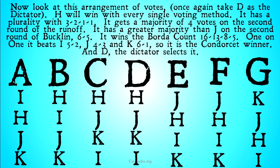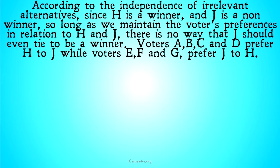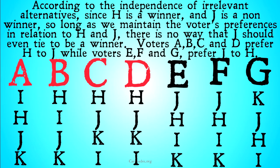Now according to the Independence of Irrelevant Alternatives, if I pick two candidates — let's say H and J — H is a winner in all of the methods and J is a non-winner. So long as we maintain the voters' preferences in relation to H and J, there is no way that J should even tie or become a winner. Voters A, B, C, and D prefer H to J, while voters E, F, and G prefer J to H. So for A, B, C, and D I can't change it so that J is higher than H, and for E, F, and G I can't change it so H is higher than J — but otherwise I can change anything, because those other things are irrelevant to J being a winner.